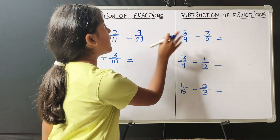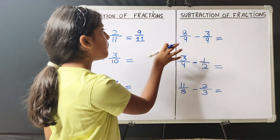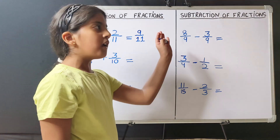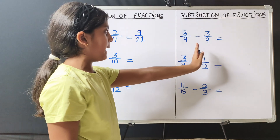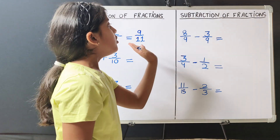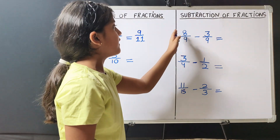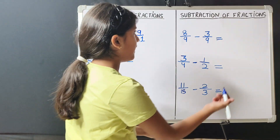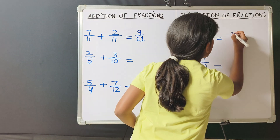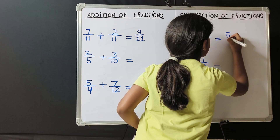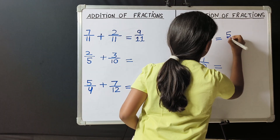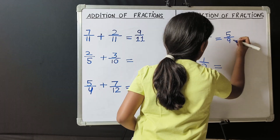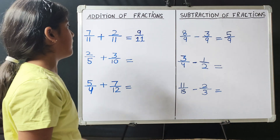Similarly, 8 upon 9 minus 3 upon 9. Here also the denominators are the same. So we will just subtract the numerators. 8 minus 3 is 5 and we will write this 9 as it is. So 5 upon 9 is the answer.